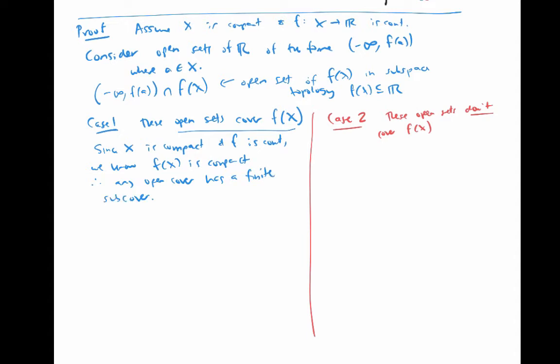So there are finitely many of these sets, say negative infinity to f of a sub one, intersection f of x, through negative infinity to f of a sub n, intersection f of x, that cover f of x.